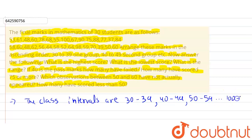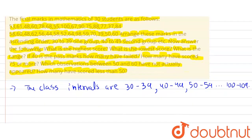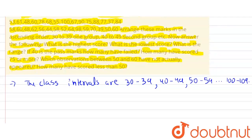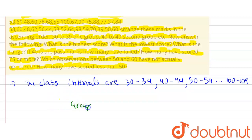The class intervals go up to 100 to 109. Next, we will take the raw data and place it in the appropriate class intervals, making a frequency distribution table. We'll make columns: the first column is for groups, and the second column is for marks in ascending order.